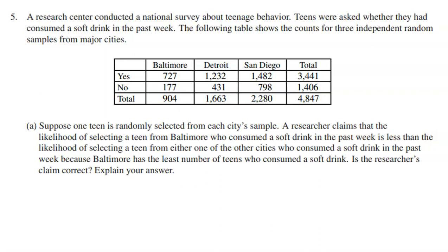Let's look at what the researcher is looking at: 727 students from Baltimore who said yes, versus 1,232 from Detroit and 1,482 from San Diego. So they're saying Baltimore would be less likely to have a teenager picked who said yes, they drank a soft drink, because 727 is less than the other values. Is the researcher's claim correct?